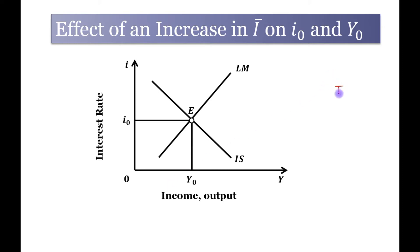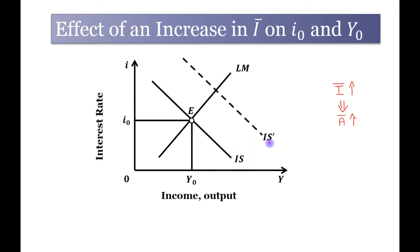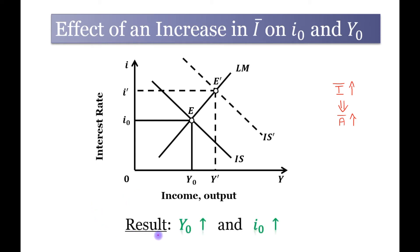Now suppose that autonomous investment spending increases. This will lead to an increase in autonomous spending, and we know that when autonomous spending increases it will lead to a rightward shift in the IS schedule. You can see that the IS curve has been shifted to IS dash. This will be the new equilibrium point E dash. Equilibrium interest rate has increased from OI₀ to OI dash, and equilibrium output has also increased from OY₀ to OY dash. So equilibrium output has increased as well as equilibrium interest rate has increased.